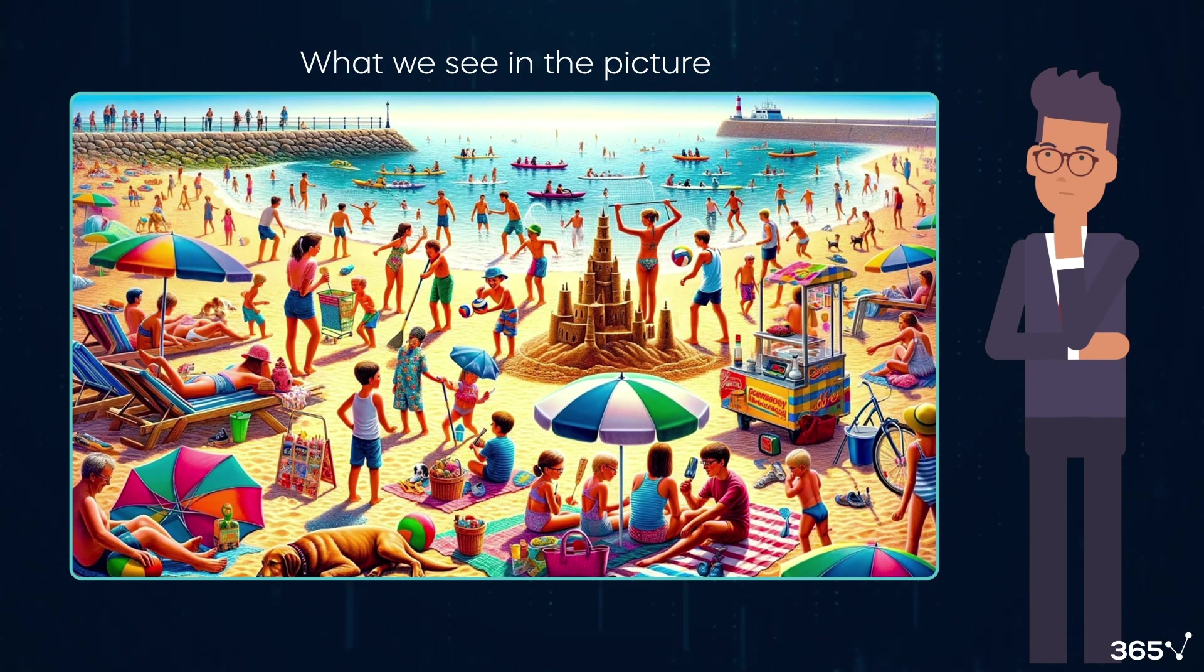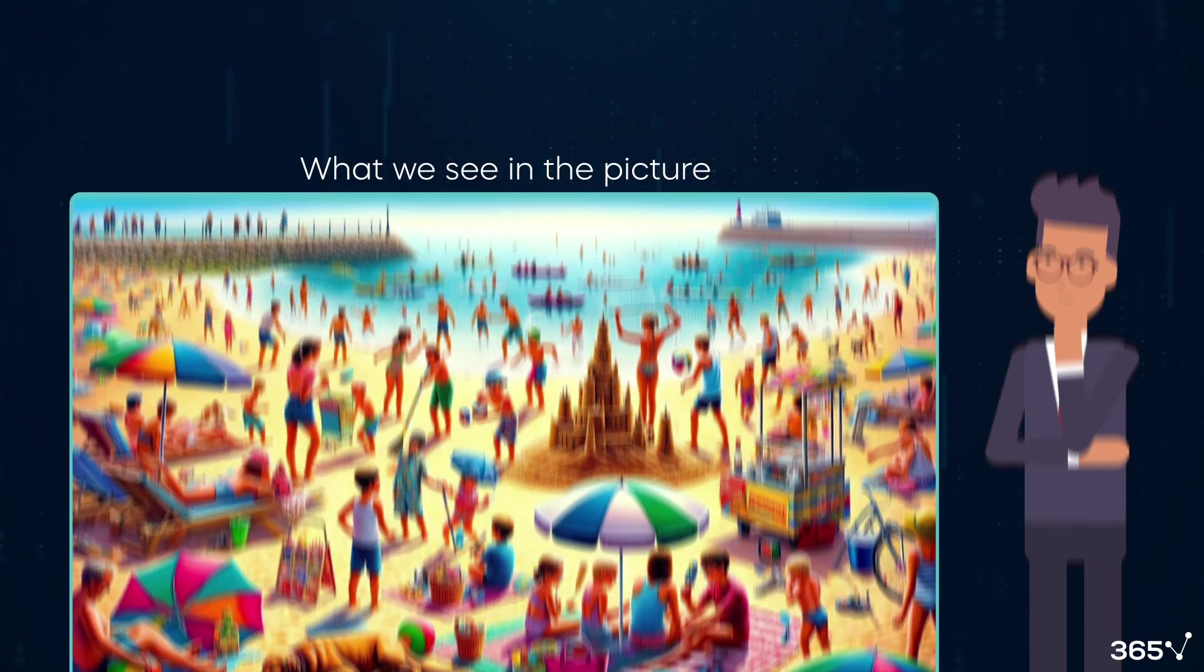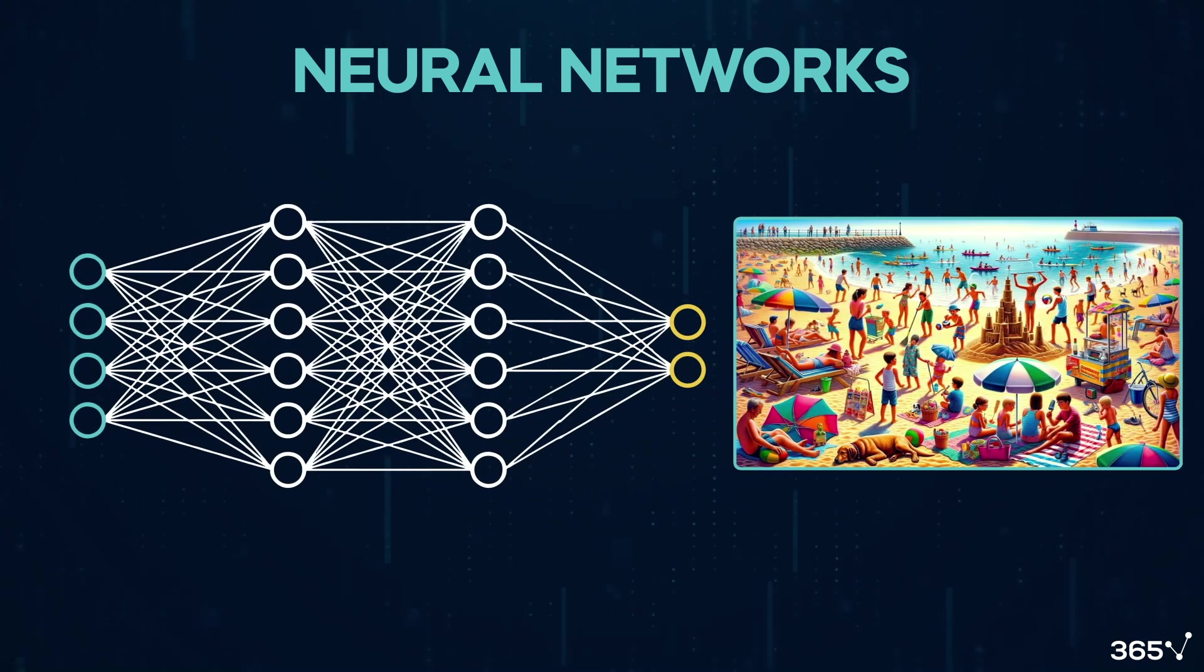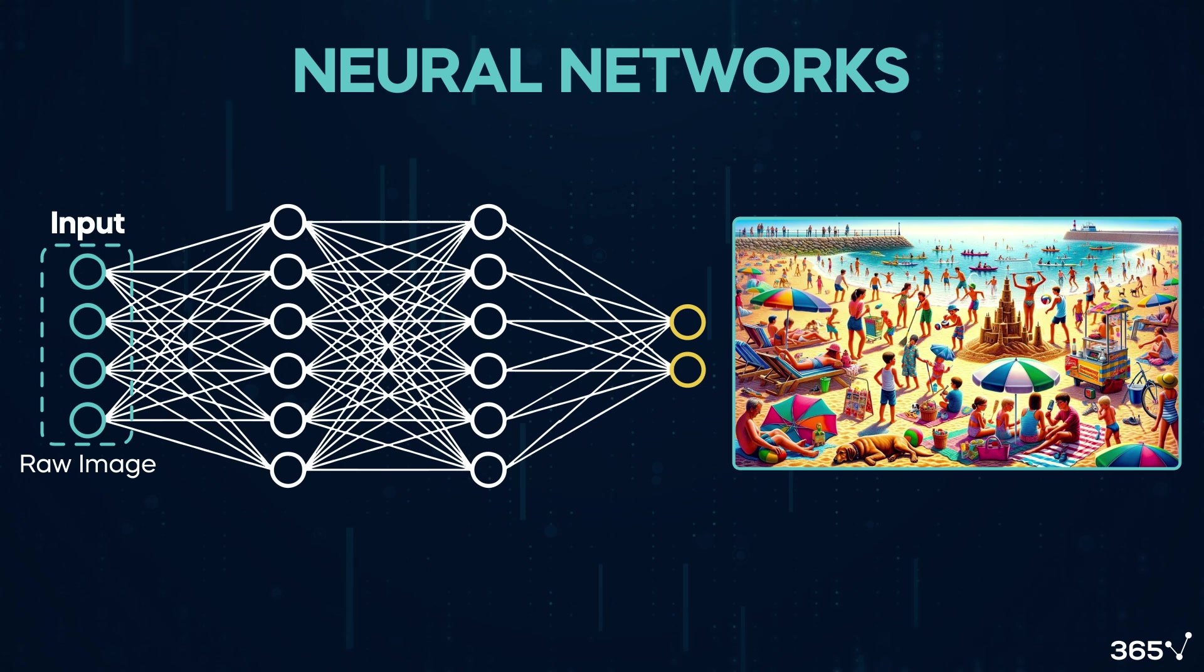In the context of deep learning, a neural network processes information similarly. Here's what a neural network resembles. Please don't be scared. Everything will make sense in a second. Picture the first layer as our input information, similar to observing a sunny, crowded beach day.